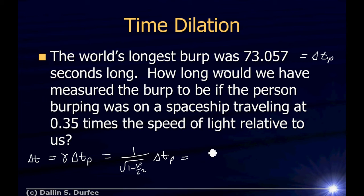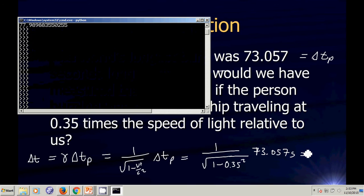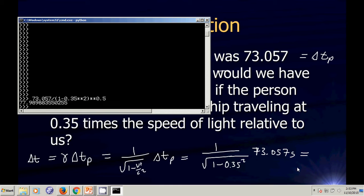So we just plug in numbers. This is going to be 1 over the square root of 1 minus 0.35 squared, multiplied by 73.057 seconds. Going to Python, it's 73.057 divided by the square root of 1 minus 0.35 squared, and we get 78.0 seconds to 3 significant digits.